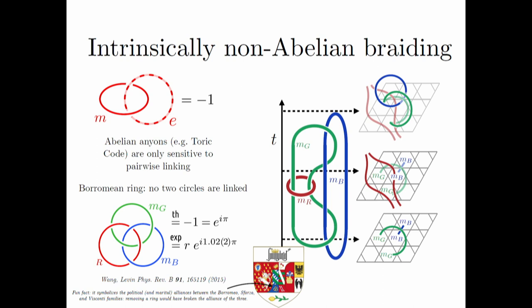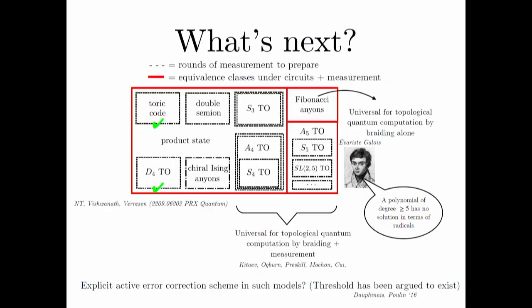We confirmed non-abelian braiding experimentally — the result we find is very close to e^{i pi}. To conclude: I've shown how to prepare the toric code efficiently and how to move beyond it to prepare non-abelian topological order given by the group D4. What's next? Our theoretical work shows that thinking of phases of matter under equivalence allowing measurements gives a new equivalence class where many phases become easy to prepare. Some of these phases are universal for topological quantum computation, but our theory suggests certain ones are still too hard to prepare by circuits and measurements — for example, Fibonacci anyons.